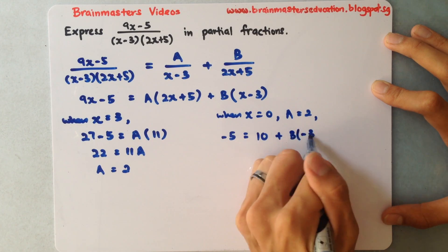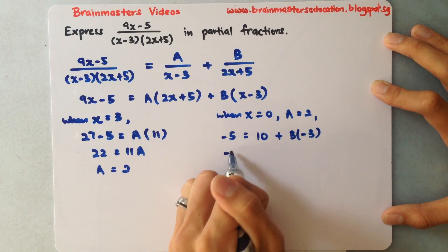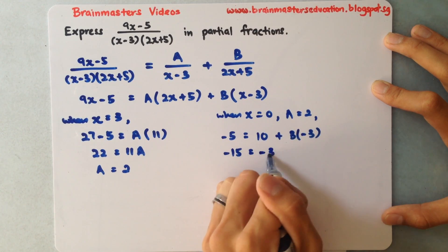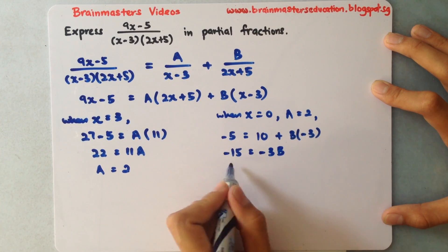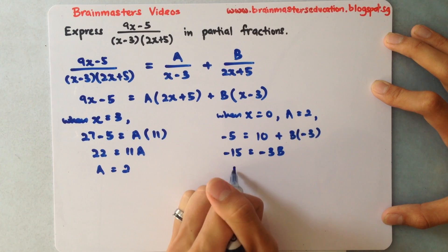I'll bring this over: it becomes -15, this one will be -3B. Both sides divided by -3 gives me B equals 5.